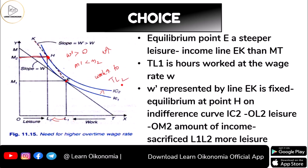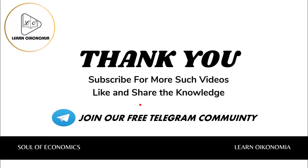Leisure has come down because of the 24-hour constraint and the trade-off involved. Leisure is now only OL2, which is less than before. So the person is going for more work as a result of the increased wage rate. That covers the income-leisure model.